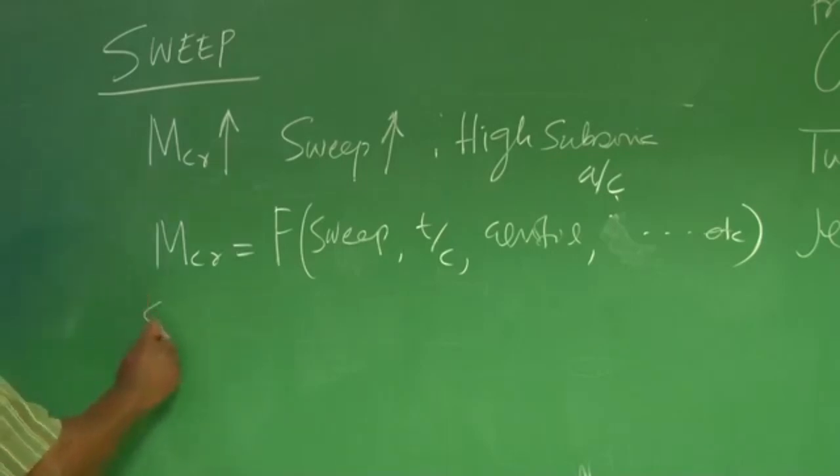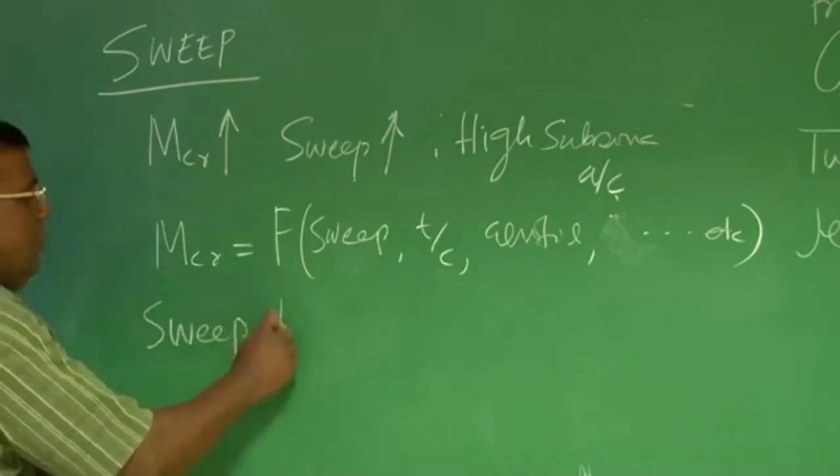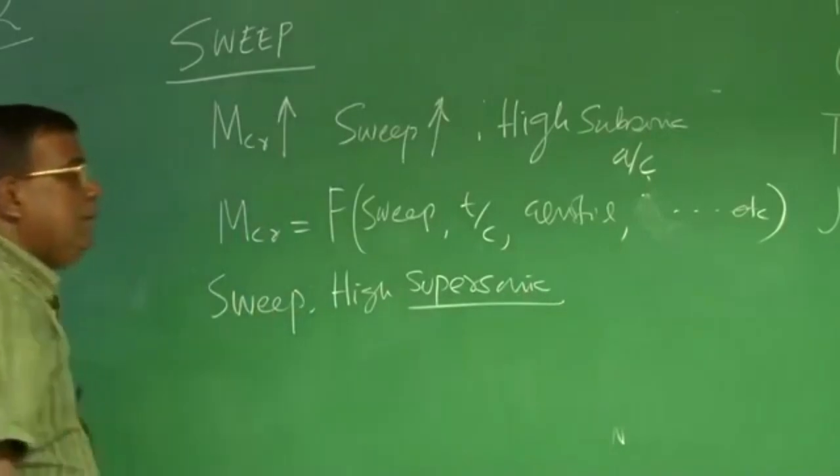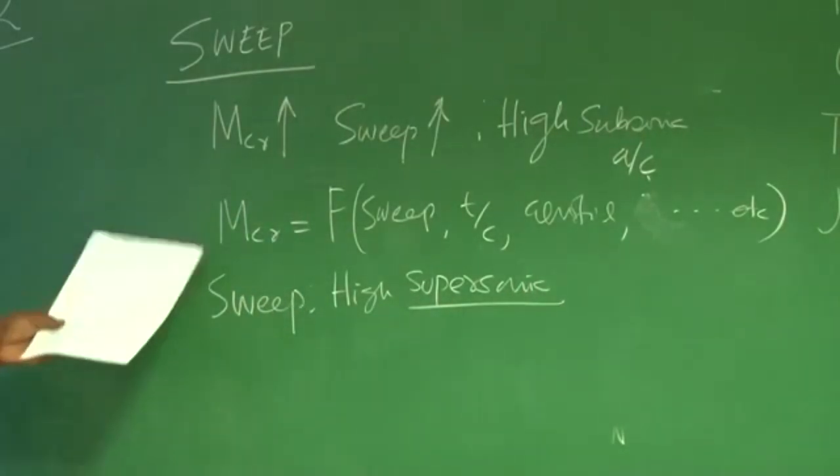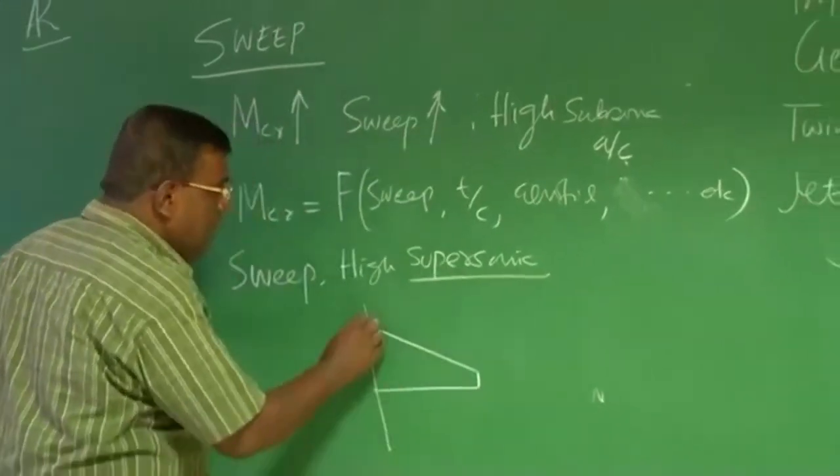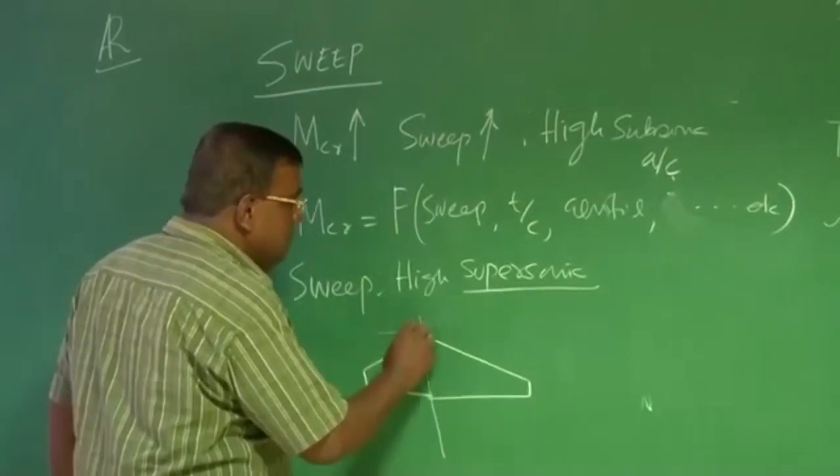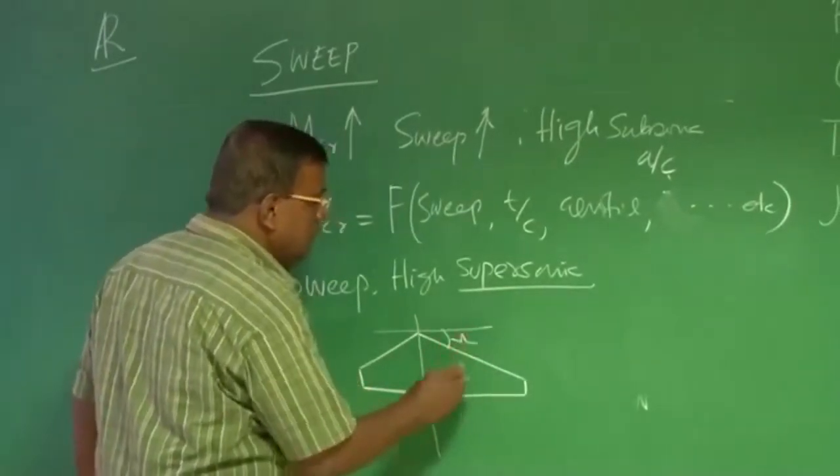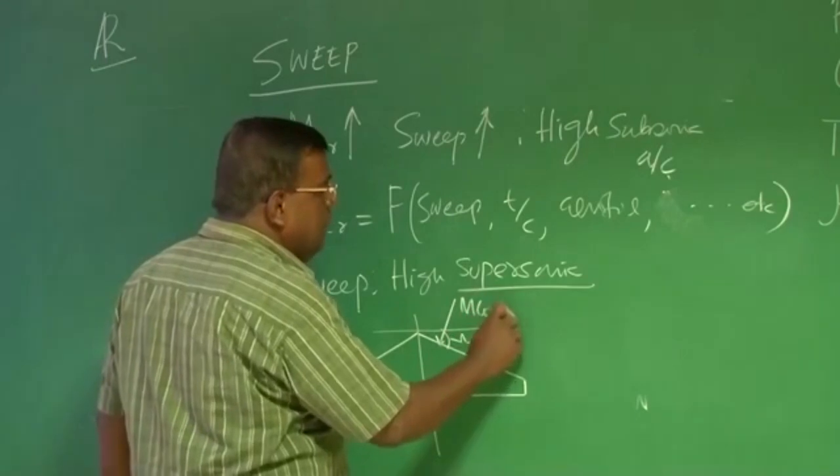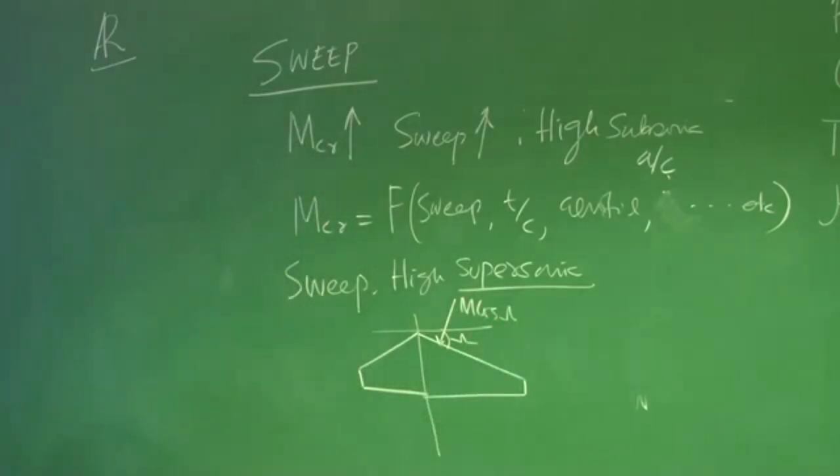But when I talk about sweep in relation to high speed, that is supersonic, as I mentioned, then the critical Mach number has no meaning the way you interpret here, because free stream already is supersonic, more than 1. So there we give the sweep for distinct reason. We try to see that the sweep angle is such that M cos lambda is less, the normal component is less, so you will have lesser drag, but it also cost you lift loss.